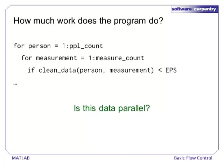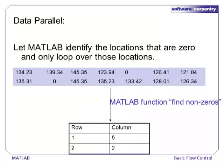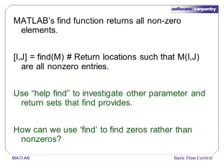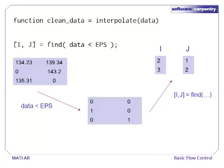A better solution would be to let MATLAB identify all the locations that are zero so that we only have to loop over locations that definitely need to be replaced. It turns out that MATLAB has a function called find that does exactly the opposite of what we need — it returns all of the non-zero elements of an array. If we ask find for two return values, it will return an array of row values and an array of column values. In order to find zeros rather than non-zeros, we first find the result of a comparison with EPS. The result is a matrix with ones where data is near zero and zeros everywhere else.